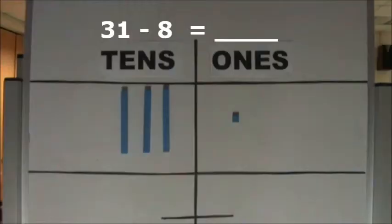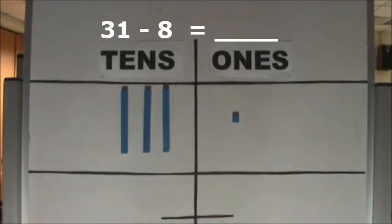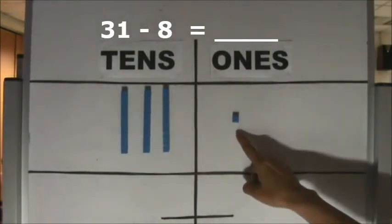Let's subtract 8 from 31 using a place value chart. This is how you write the subtraction equation: 31 minus 8. There are 31 cubes. 31 is 3 tens and 1 one.